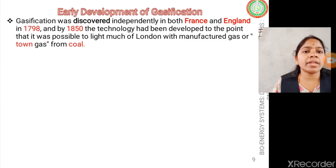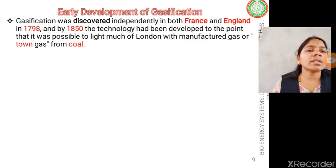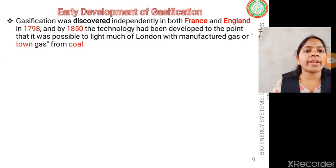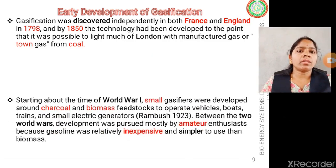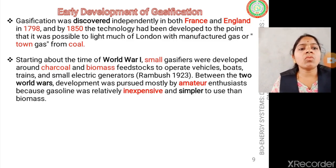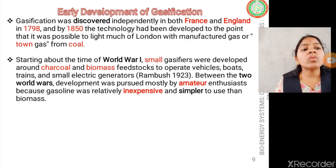Gasification was independently discovered by both France and England in 1798. After the experimental stages, these discoveries were used to develop the process mainly for lighting lamps using producer gas produced mainly from coal. During the First World War, small gasifiers were developed using natural resources — charcoal and biomass feedstock — to operate vehicles, boats, and trains.